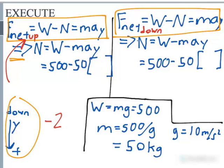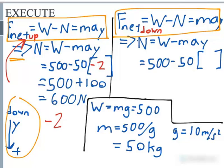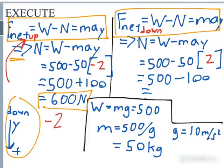So if we went ahead and we plugged in a minus 2 here, we end up getting 500 plus 100 because then it would be a minus a negative 100. So that would give us 600 newtons. If the elevator is moving up. Now if the elevator is moving down, we get the opposite. We get a positive 2 here, and that would give us 500 minus 100, which would equal 400.